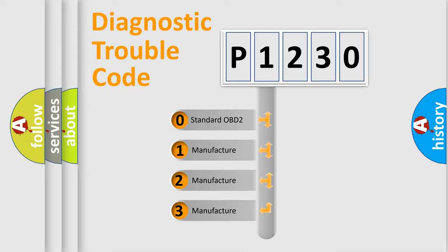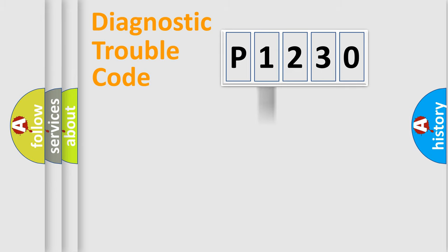If the second character is expressed as zero, it is a standardized error. In the case of numbers 1, 2, or 3, it is a more specific expression of the car-specific error.